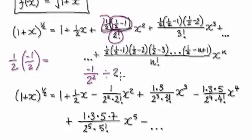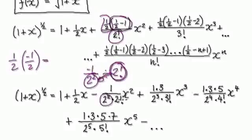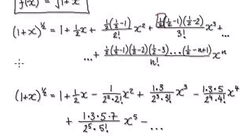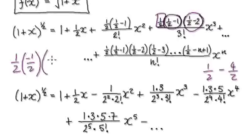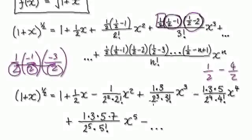But then you divide by two factorial, so this gets multiplied to the bottom. So you've got two squared, and then this two factorial gets multiplied to the bottom. This negative one here — this is this negative here. And you've got your one. Now let's look at the next term. You've got your half, and then negative a half, and then a half take away two — so that would be negative three over two. So this would be two to the power of three. This matches up with this.